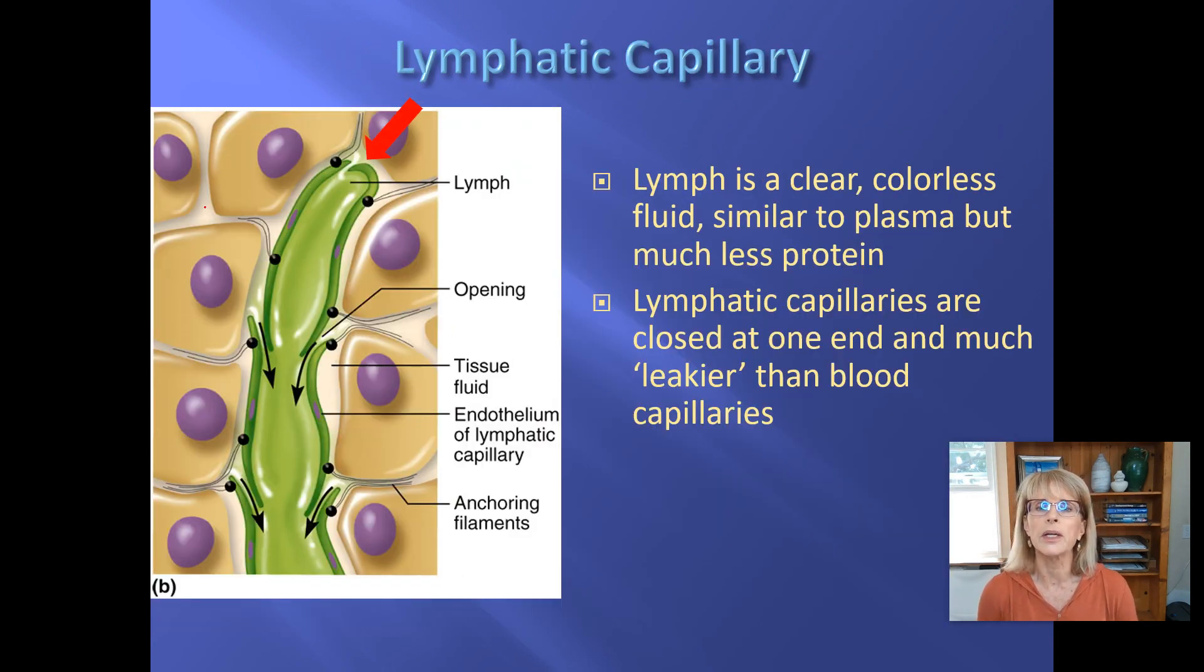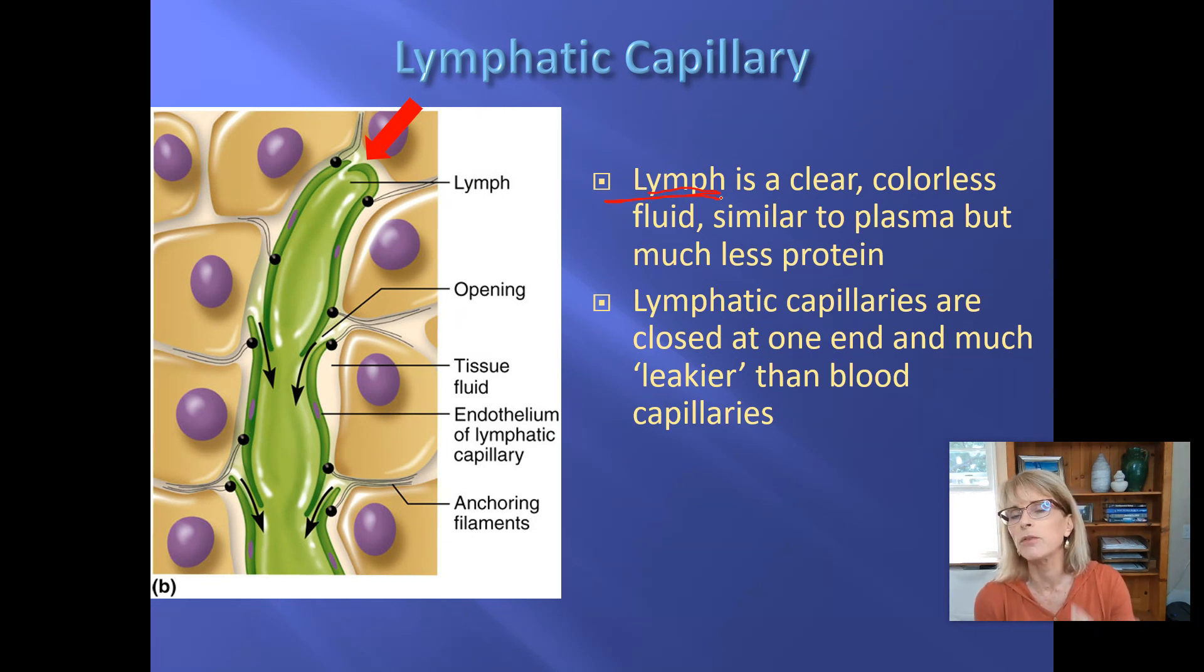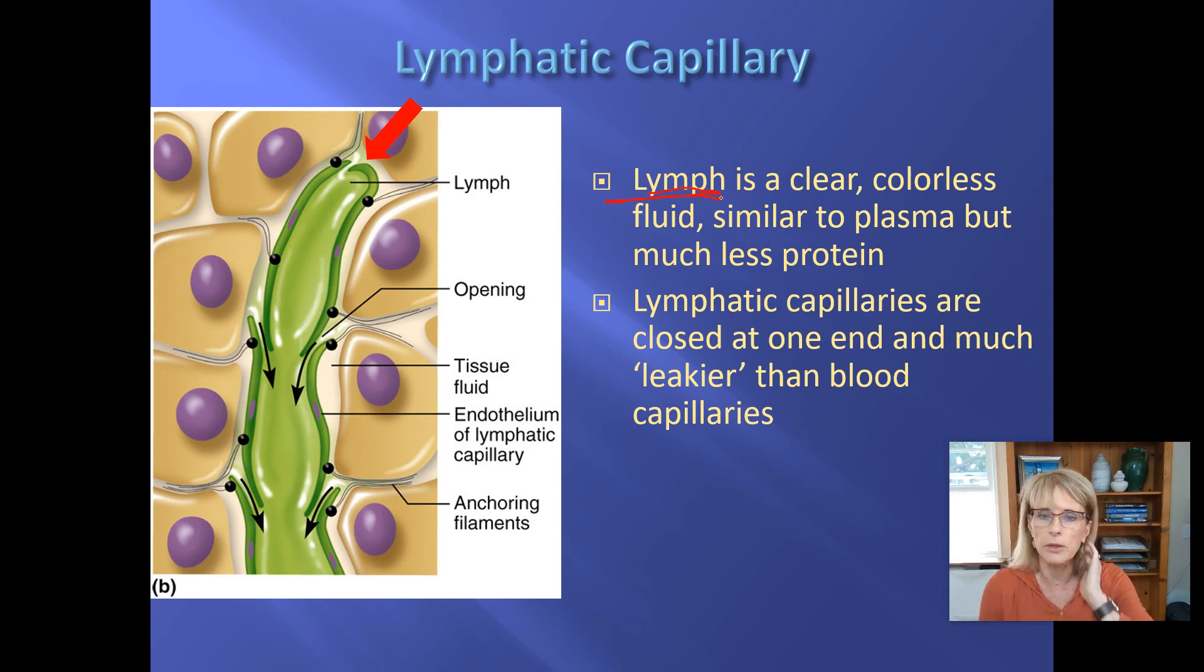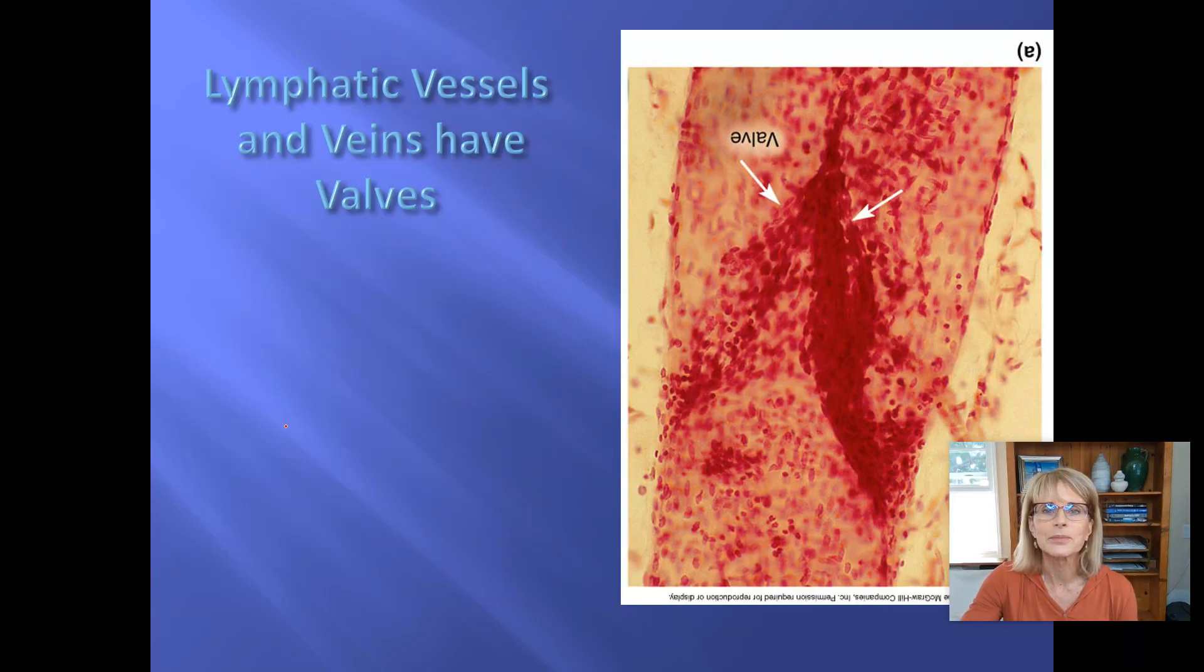So the lymphatic capillary—this stuff that's in a lymphatic capillary is called lymph. It's clear, it's colorless, it's similar to plasma, it's just missing the big proteins albumin and fibrinogen. Otherwise, it's really really similar. These lymphatic capillaries are kind of leaky, so when the pressure is higher here than it is in here, lymph will go in and head back on its way towards the heart.